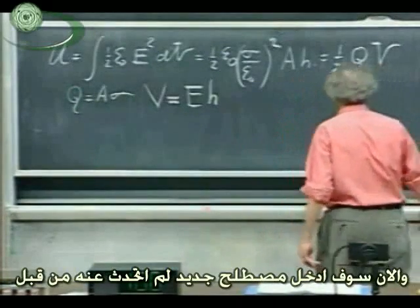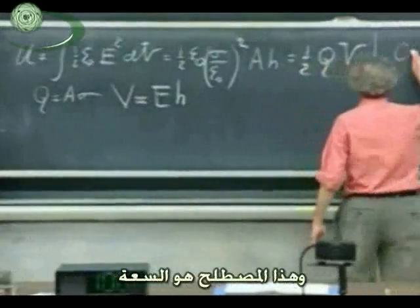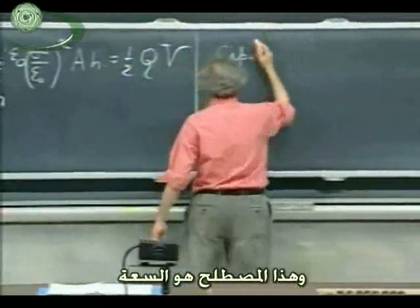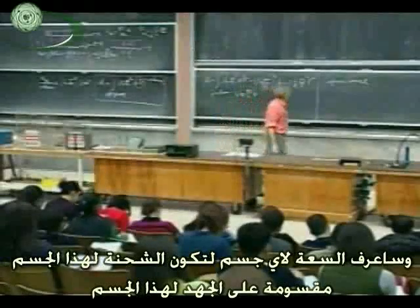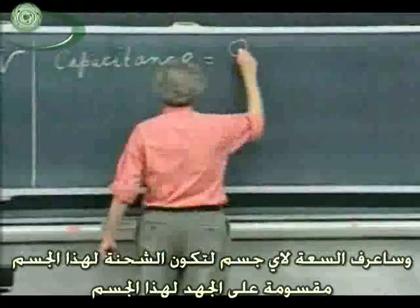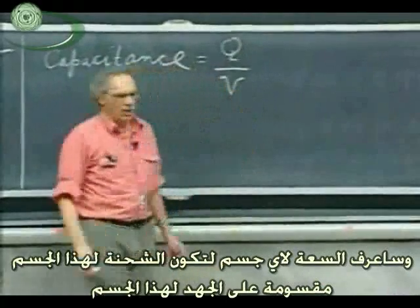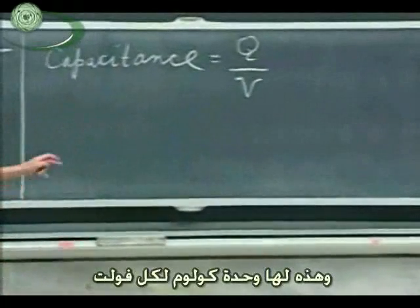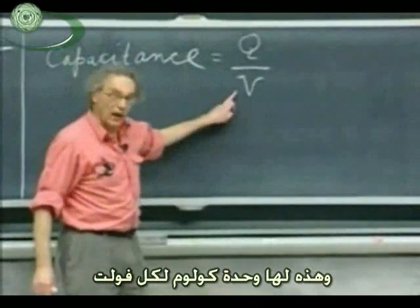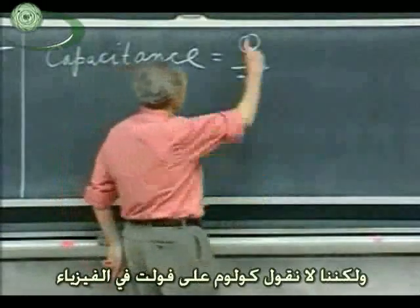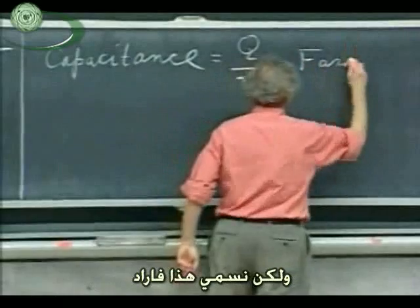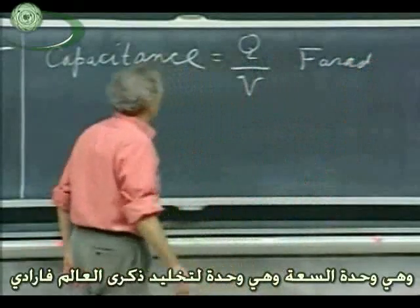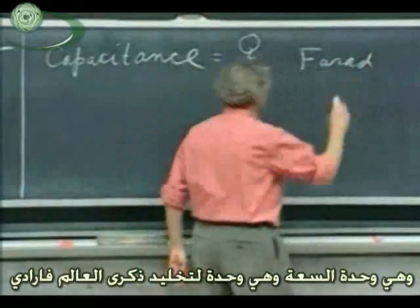I will now introduce something that we haven't had before, and that is the word capacitance. I will define the capacitance of an object to be the charge of that object divided by the potential of that object. And so the unit is coulombs per volt. This V is volt now — it is potential. But we never say that it is coulombs per volt in physics. We write for that a capital F, which is Farad. One farad is the unit of capacitance, undoubtedly named after the great maestro Faraday.